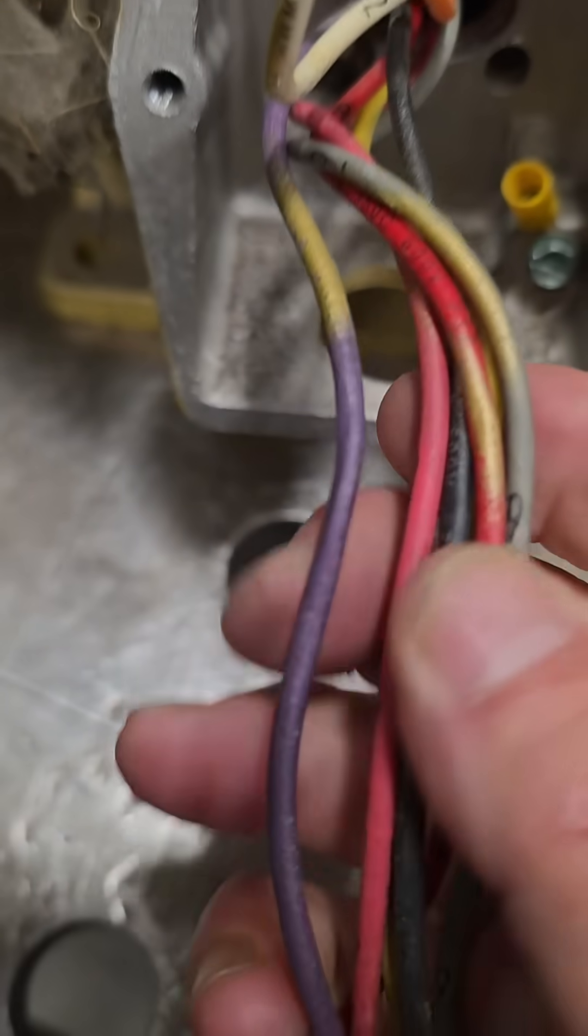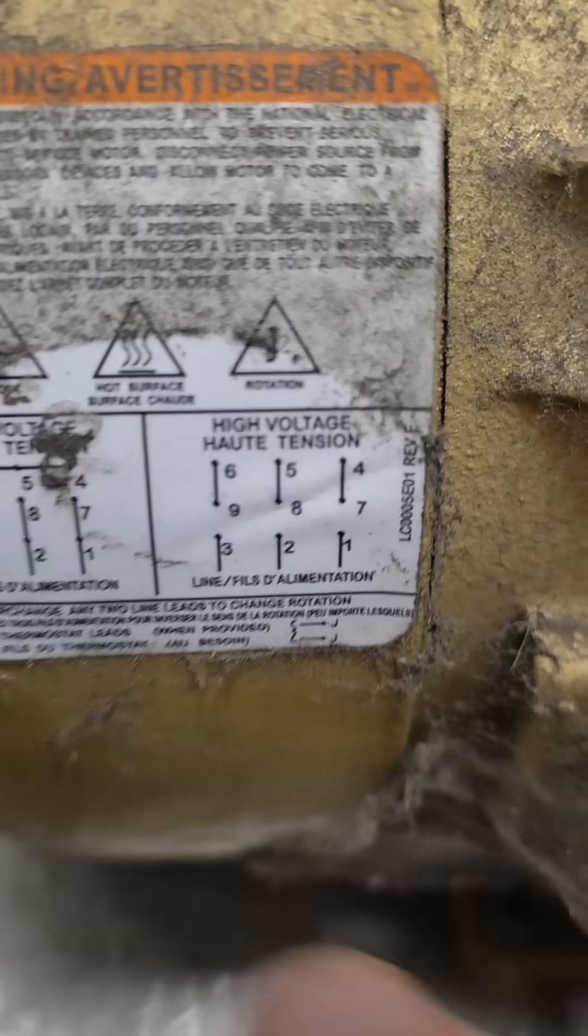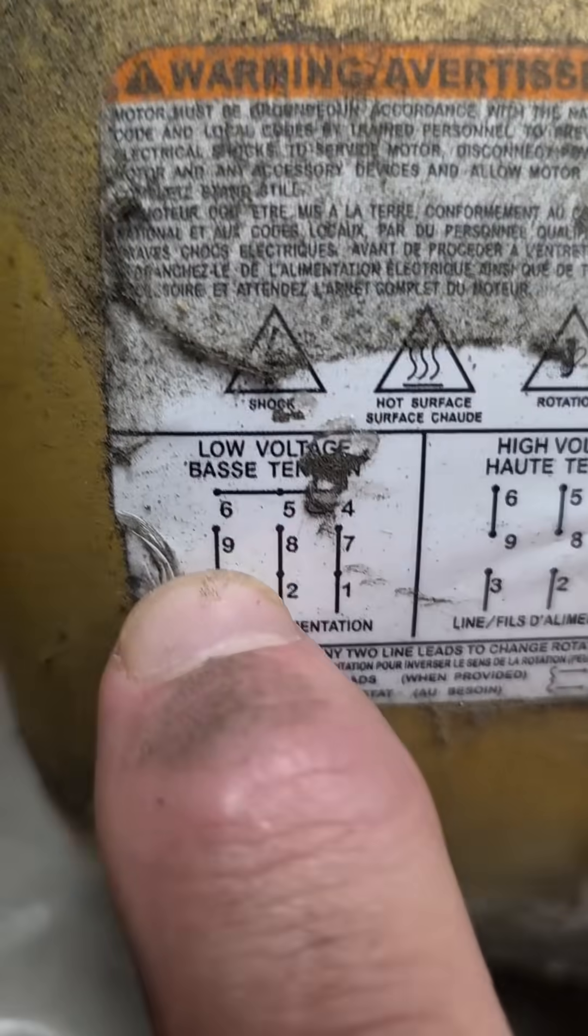Next thing is to get all your other leads and start looking at the little numbers that are written on the wiring itself. And then wire the numbering according to this high and low voltage.